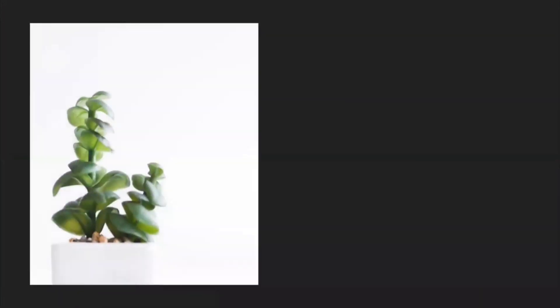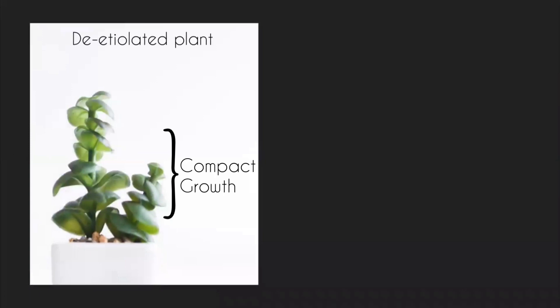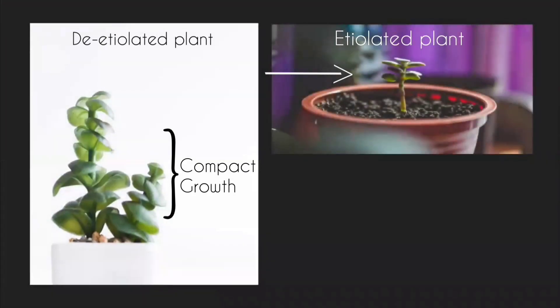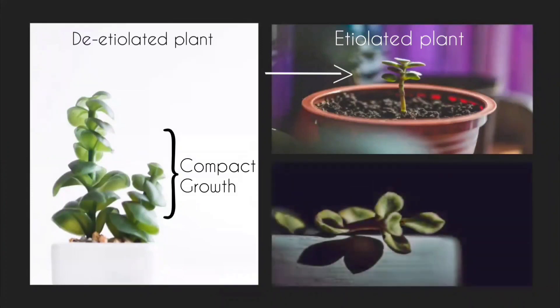Crassula ovata — our succulent plant — needs sufficient sunlight in order to maintain compact growth. This Crassula plant has stretched out quickly in search of sunlight. The leaves are spaced and contain thin stems. Sometimes the leaves become smaller than usual; here the succulent plant is completely curved, one of the first signs that the plant is not getting enough sunlight and has started bending toward the bright source. Once they elongate, no matter how much sunlight you provide, you cannot revert it back.